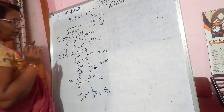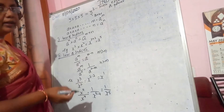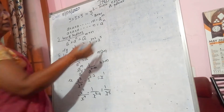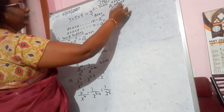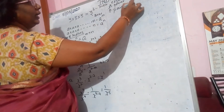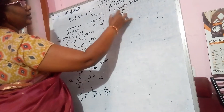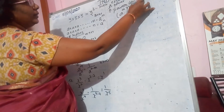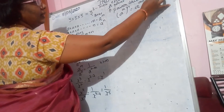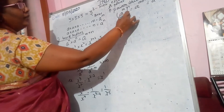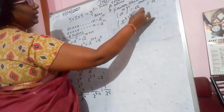These are the two laws of indices which you have already learned in your lower classes — I am only revising them here. Next is the power law, the third law. It says a raised to the power of m, raised to the power of n, equals a raised to the power of m times n. For example, x raised to the power of 3, raised to the power of 4, equals x raised to the power of 3 times 4, which is x raised to the power of 12.